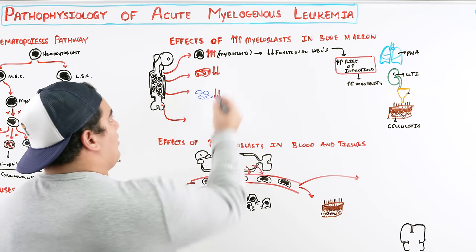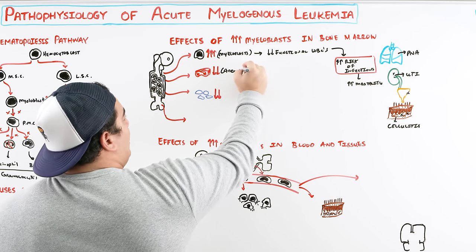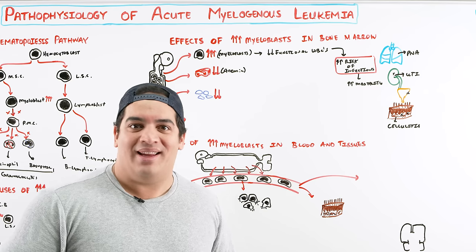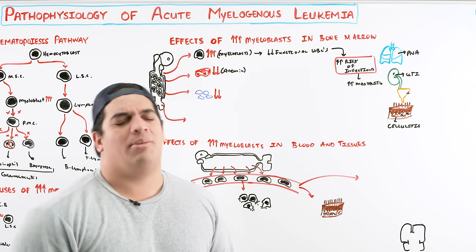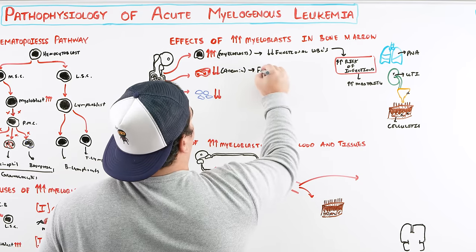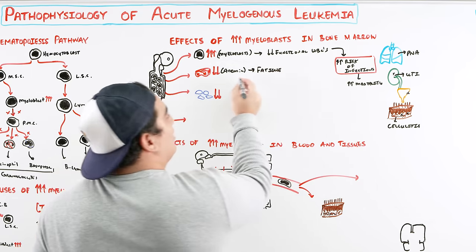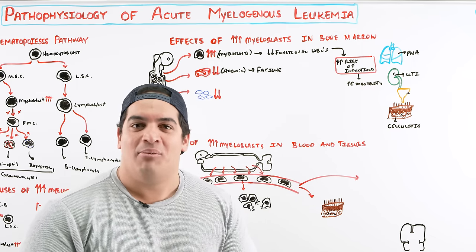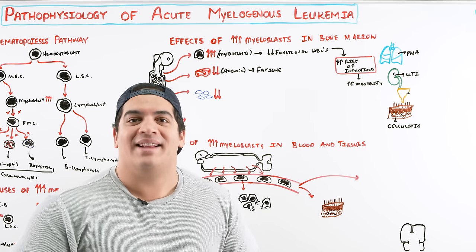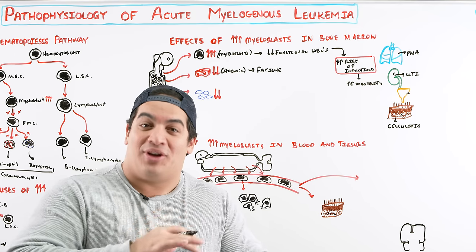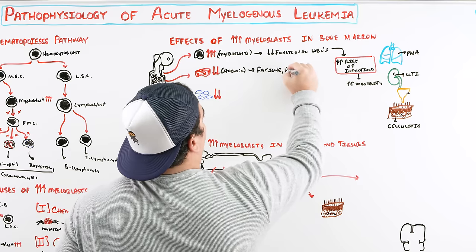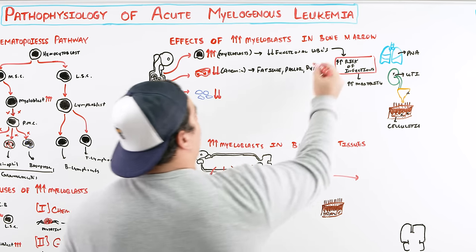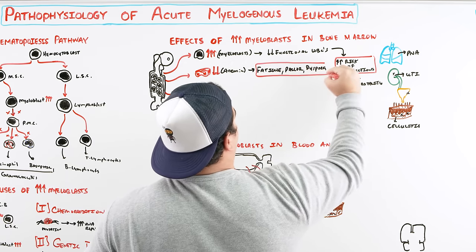The other consequence is that you're dropping down the number of red blood cells — we call this anemia. When you have fewer red blood cells, you don't deliver oxygen to the tissues, so energy production decreases and you become fatigued. You also develop pallor because there's less oxygenated hemoglobin giving that reddish-pink hue to the skin. With severe anemia, dyspnea can also occur. You'd need a CBC to confirm this.